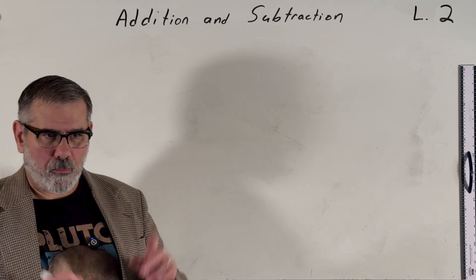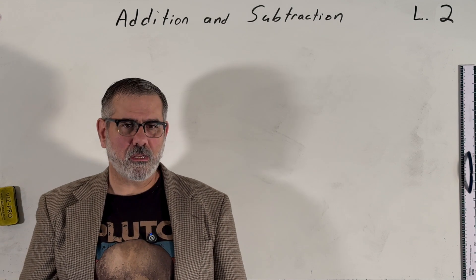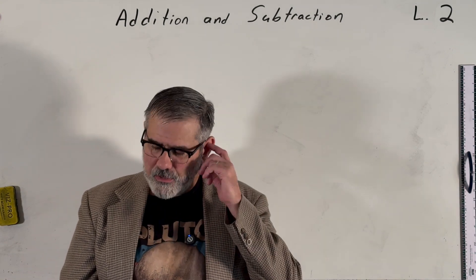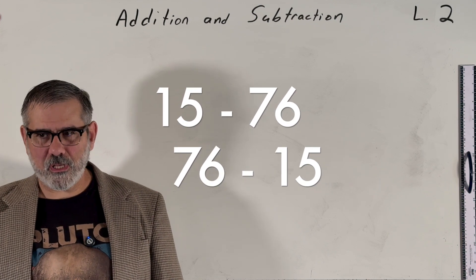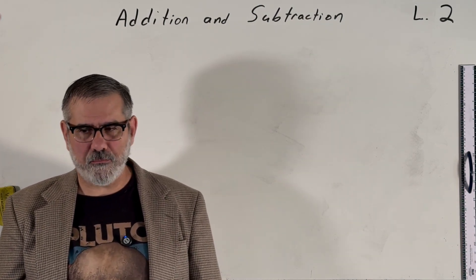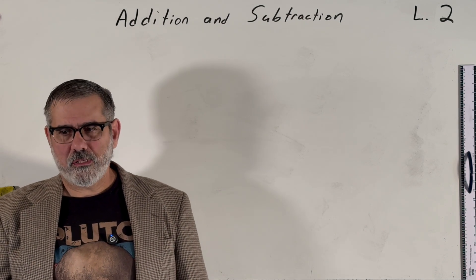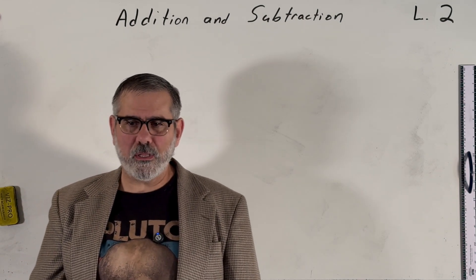But it does work a little bit differently, but we begin the same. Let's try the problem. Let's subtract 15 from 76. Now the first question that comes to mind when you hear that is, what are we going to do? Are we going to do 15 minus 76 or 76 minus 15? So you have to figure out what the proper ordering of these numbers are because that's important. So in this case, subtracting 15 from 76 is the same thing as 76 minus 15.